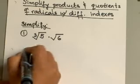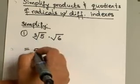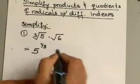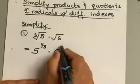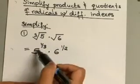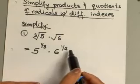The first thing you start by doing is rewriting these radicals with rational exponents. So you end up with 5 to the 1/3 times 6 to the 1/2.